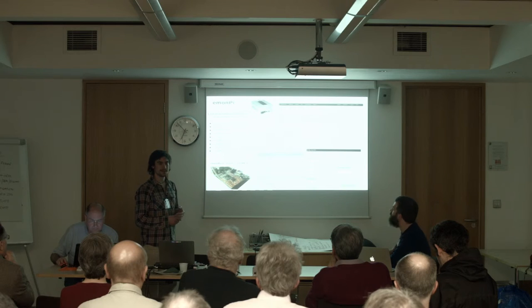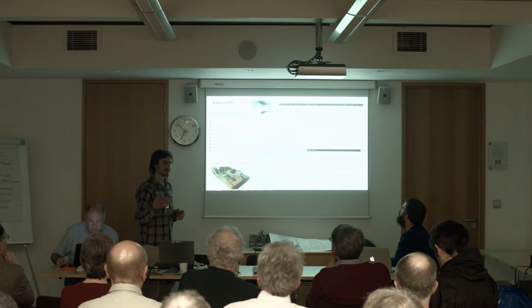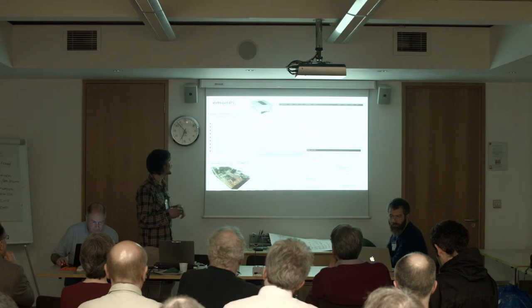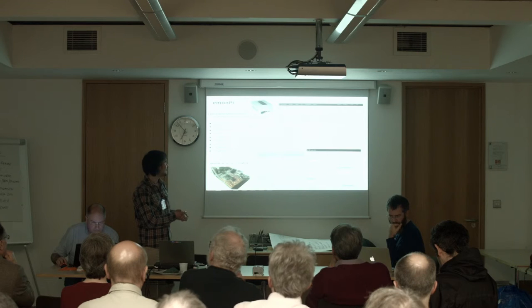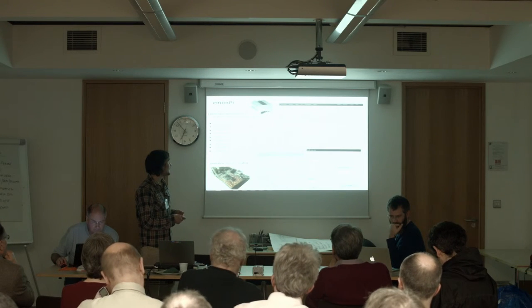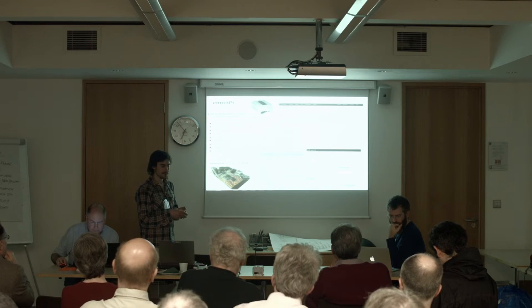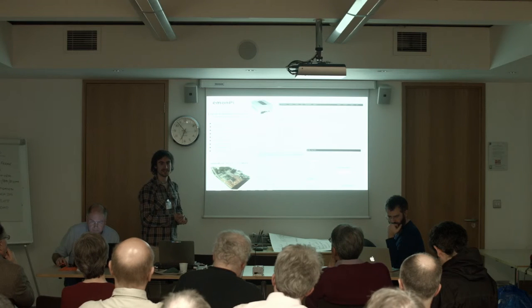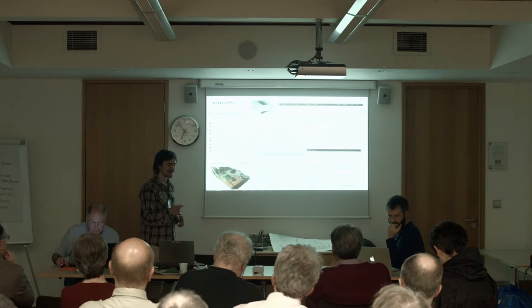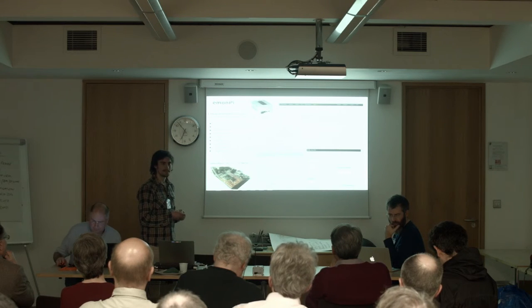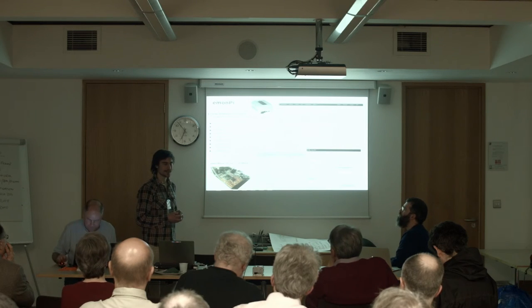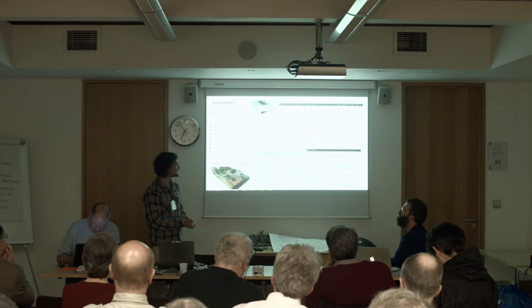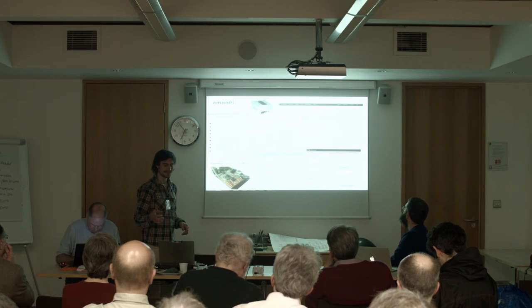EmonPi runs an open MQTT server — authenticated but open port — so any device on the network with the correct authentication details can connect in and listen to the energy data. Vice versa, if you want to post anything to EmonCMS, you can just post to the MQTT server running on EmonPi and it'll appear in EmonCMS. The latest software stack for EmonPi — a pre-built SD card image — has Node-RED and OpenHAB, an open source home automation system, all running and configured as standard. If you want to use Node-RED to pull in data from somewhere exotic, such as weather data from Weather Underground to feed into EmonCMS, that's just a few drag and drops away.